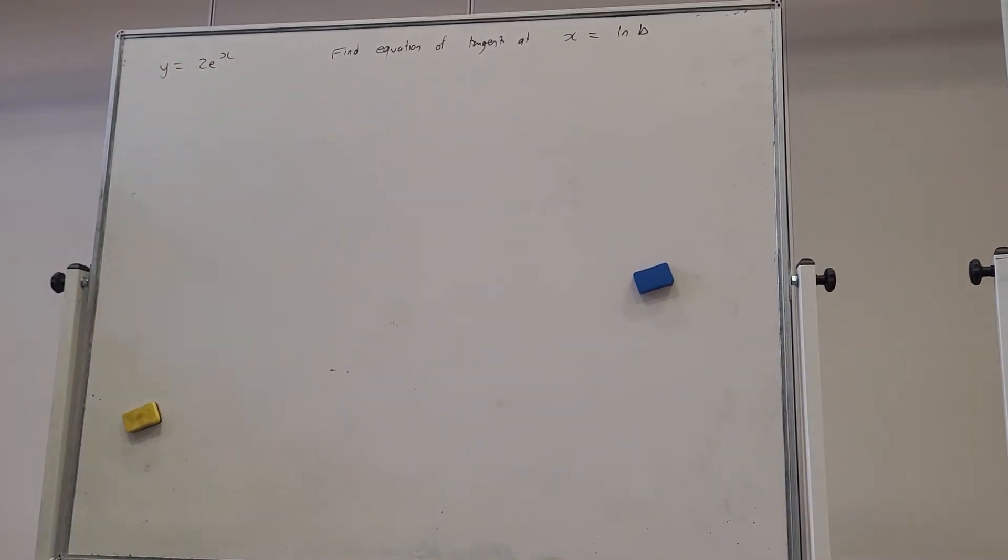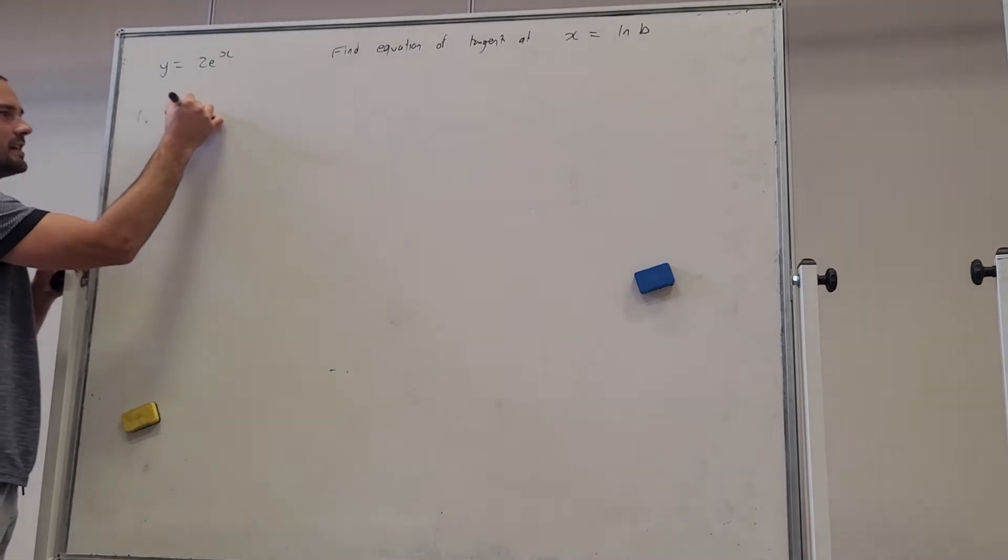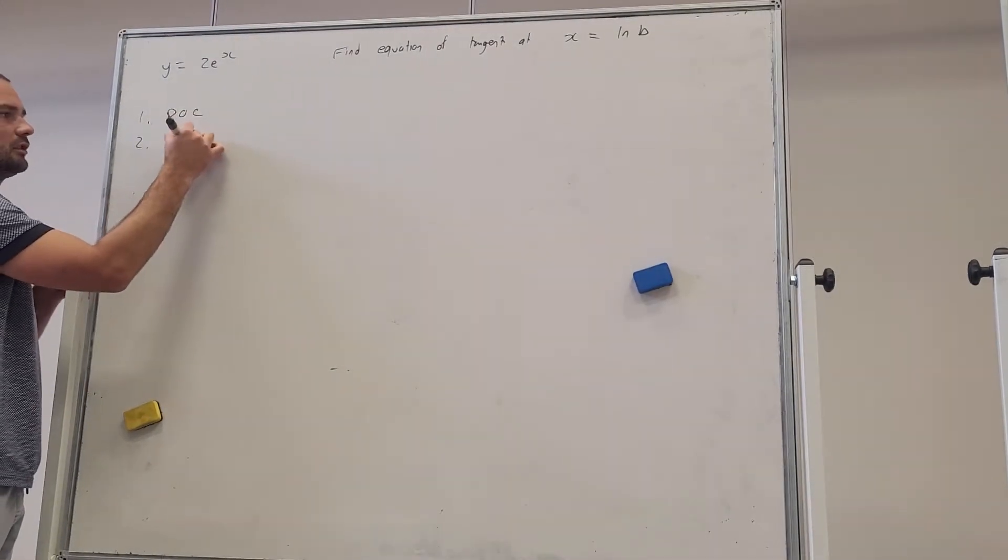To find a tangent we need two things. We need a point of contact and we need a slope.